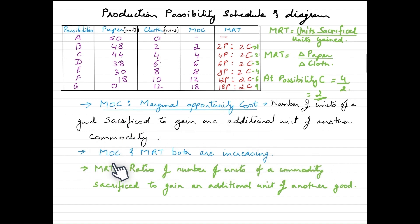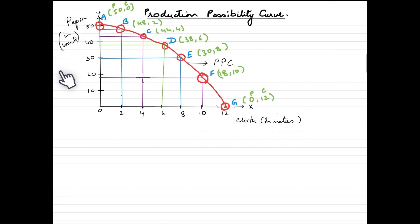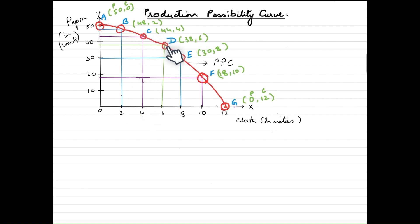Let's take a look at how the diagram for the production possibility curve is plotted. Paper is the commodity being sacrificed to gain more cloth, so paper is plotted on the y-axis and cloth on the x-axis. Cloth is measured in meters and paper in units. At possibility A we have 50 units of paper with no cloth. At B, 48 units of paper with 2 units of cloth. At C, 44 units of paper and 4 units of cloth. Moving all the way to G, there is no paper but 12 units of cloth. After joining these points, we get our PPC curve.